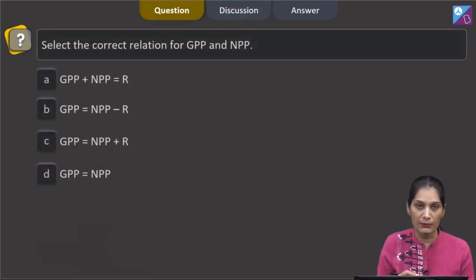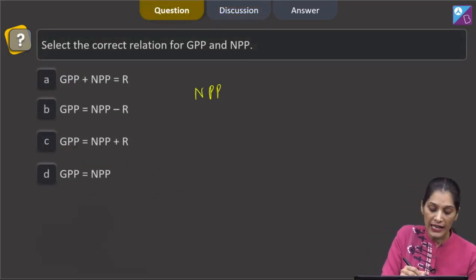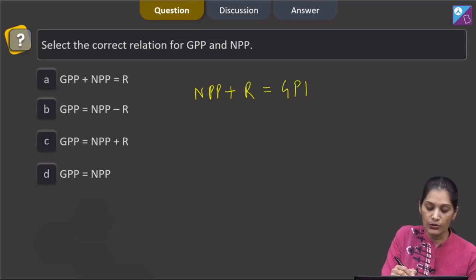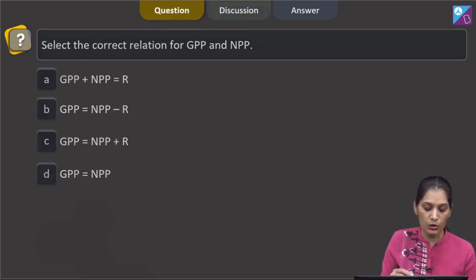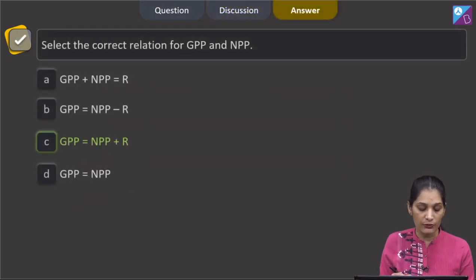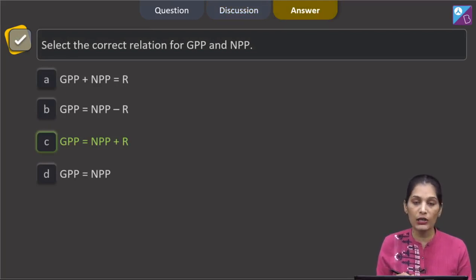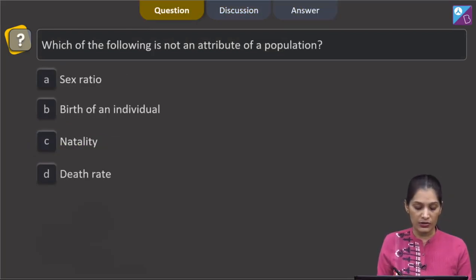Is there any equation which is matching to this? GPP plus NPP is equal to R? No. GPP is equal to NPP minus R? No. GPP is equal to NPP plus R? Yes. GPP is equal to NPP? No. So the correct option for the given question is option C which says GPP is equal to NPP plus R. Let's move to the next question.